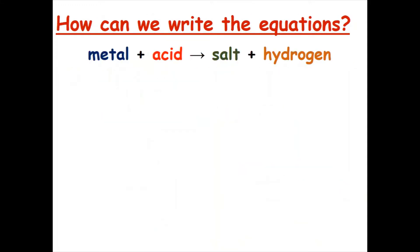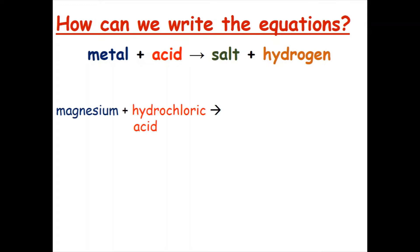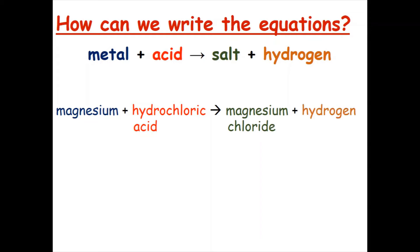Now we are going to look at how to write the word equations. As mentioned before, the general word equation is metal plus acid reacts to salt plus hydrogen. We are now going to look at a specific example. So we have magnesium, which is the metal, and hydrochloric acid, which is our acid. They react to form a salt called magnesium chloride — remember that hydrochloric acid always forms chlorides — and hydrogen.